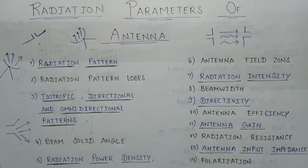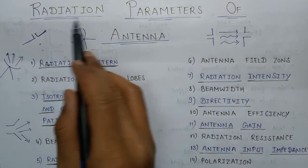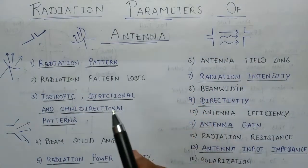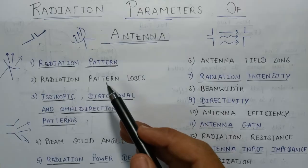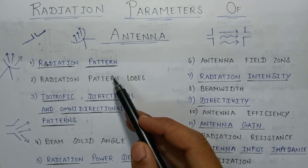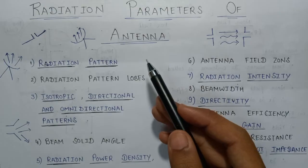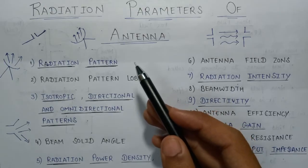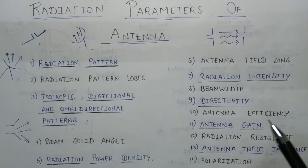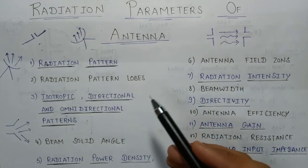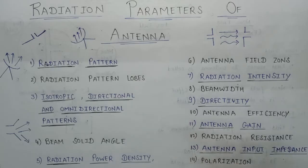In this lecture we are going to start a new topic named radiation parameters of antenna. Radiation parameters generally specify the properties and characteristics of an antenna by the help of different parameters. There are a total of 15 parameters of an antenna, and these will all be covered in separate lectures.